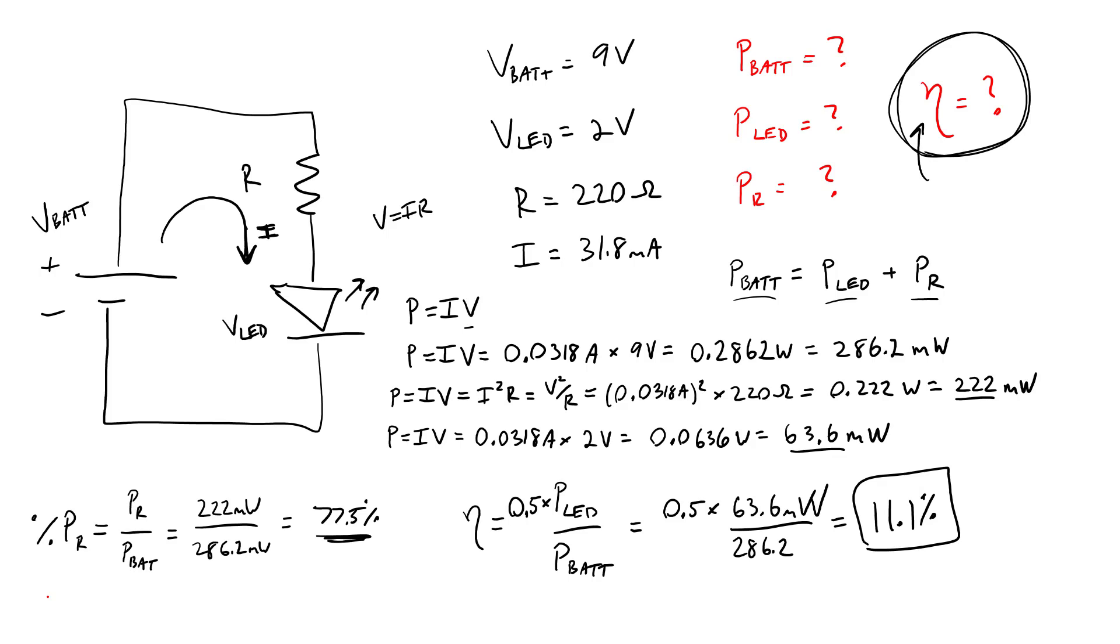Now, there are a couple ways that we could improve that efficiency. One is to use a lower voltage battery. You may have noticed that we have a 9-volt battery here, but we only have a 2-volt drop across our LED, meaning we are dropping 7 volts across that resistor. That is a lot of power that's just being dissipated by this resistor without really for any reason. We don't need a 9-volt battery to power an LED that only requires a 2-volt voltage drop.